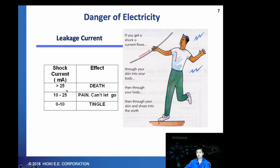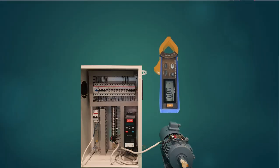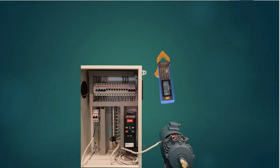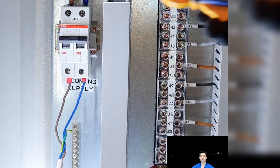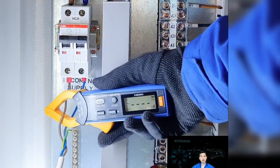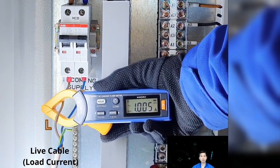Now, with that short background on leakage current, I shall explain how to measure leakage current with the CM4001. For the demonstration example, we will be using this distribution board which is powering the VSD model. With the CM4001, we will use it to measure the live, live and neutral, and also the earth cable. In the first example, you can see how we can measure the load current of 1A by clamping on the live cable.